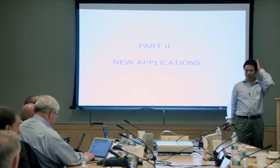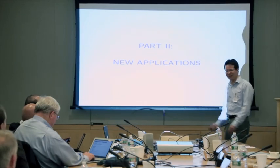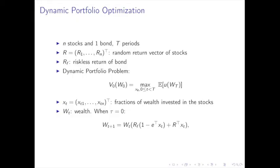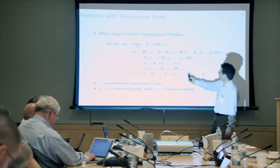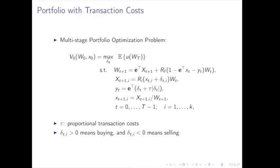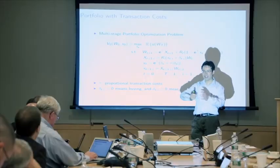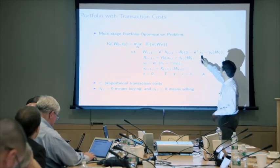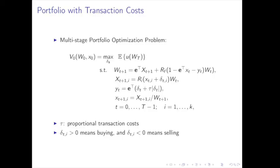Now for new applications. The first is portfolio optimization with transaction costs. We still maximize expected utility of terminal wealth, but now there are transaction costs. Tau is the proportional transaction cost. Delta is the buying or selling part of stocks. X is the ratio of stock allocation, and Y represents the transaction costs. This produces a more complex Bellman equation.